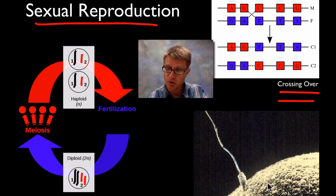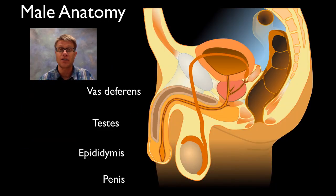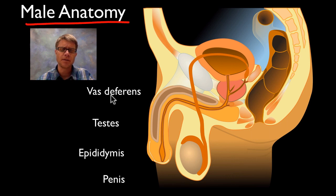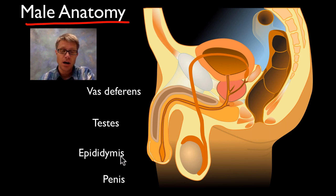Right here we've got a human sperm fertilizing an egg, and most of this podcast is about how that occurs. We begin with male anatomy. Basically the things you should be familiar with is the penis — the function of that is simply to deliver semen into the vagina. We also have the testes.